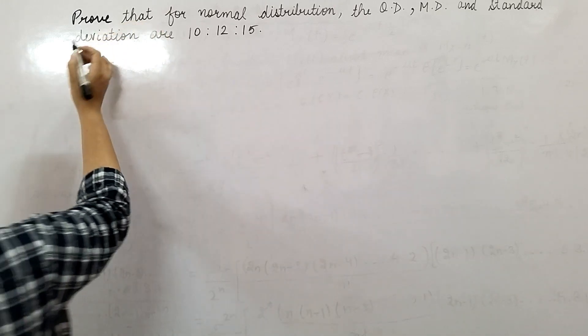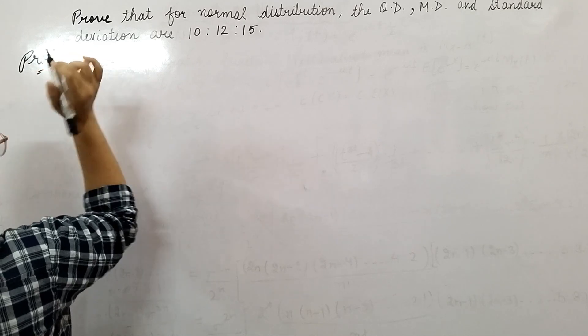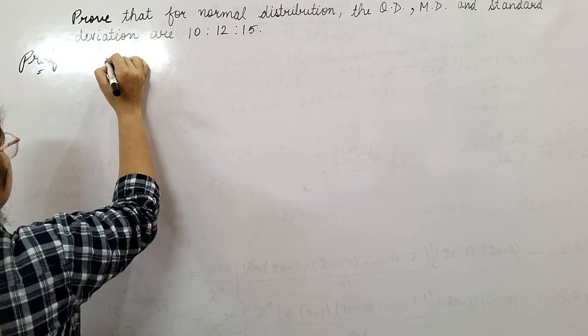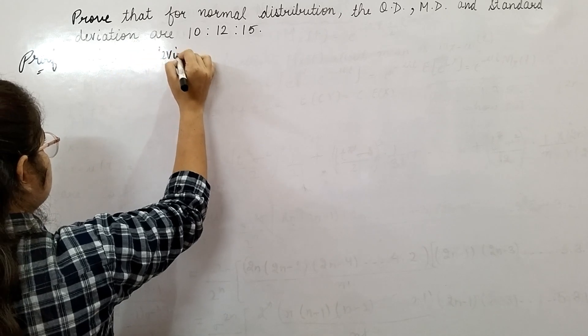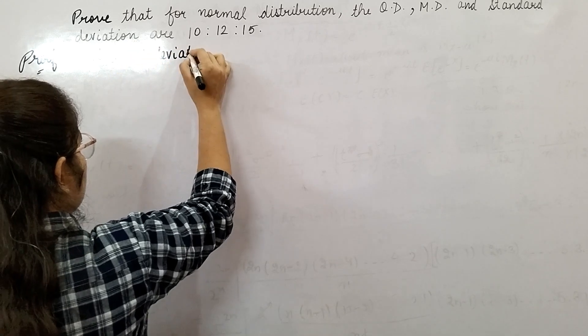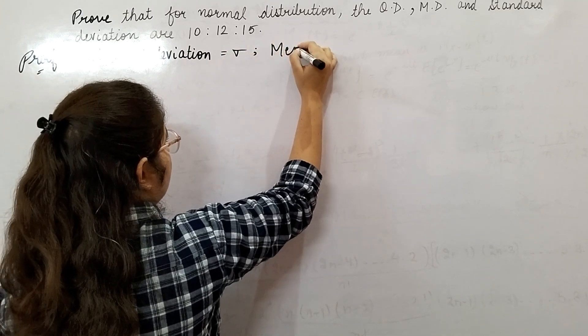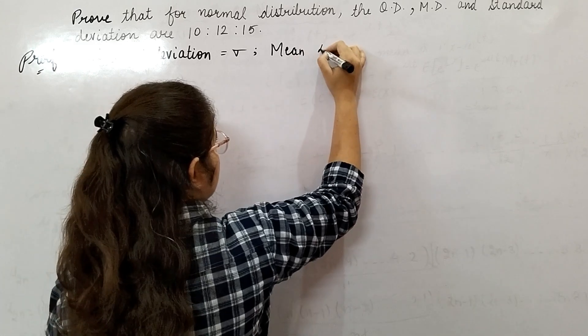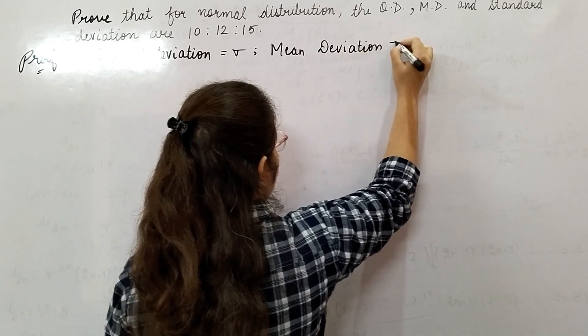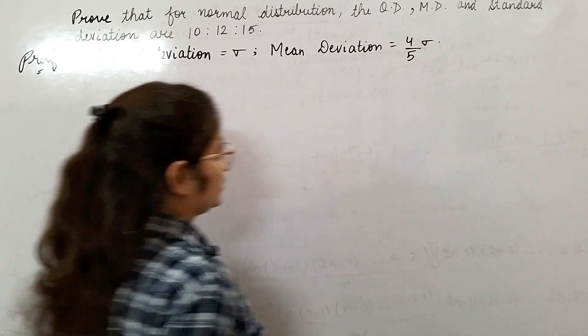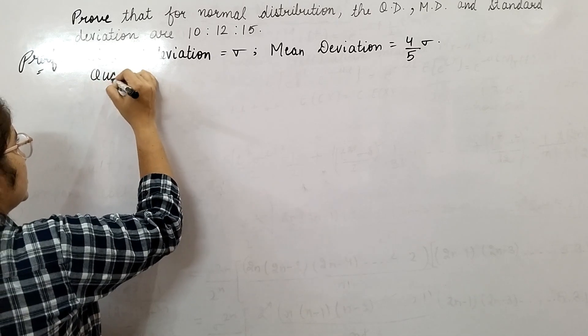In the proof, standard deviation is sigma. Mean deviation we already calculated—it is 4 by 5 sigma. Now in this video, we will calculate quartile deviation.